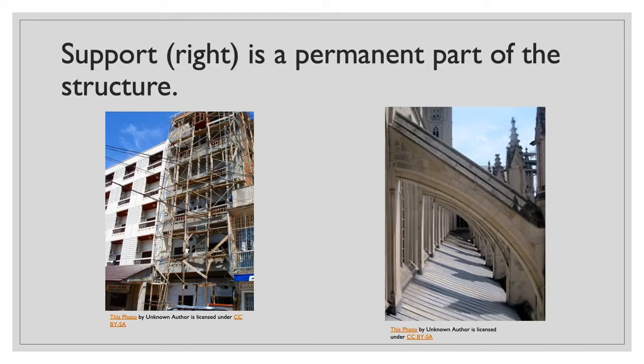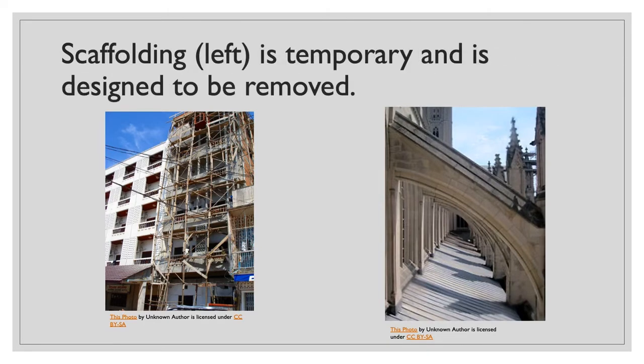If you look closely, however, you'll note that the structures on the right support the walls of the cathedral. Take them away and the whole structure collapses. They are therefore a permanent part of the building. The scaffolding on the left, however, is temporary and is designed to be removed. Once the architect has determined that the wall can stand on its own, the scaffolding can be taken away.